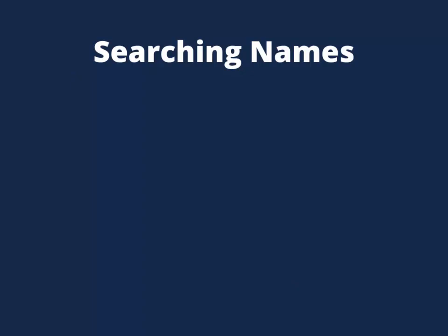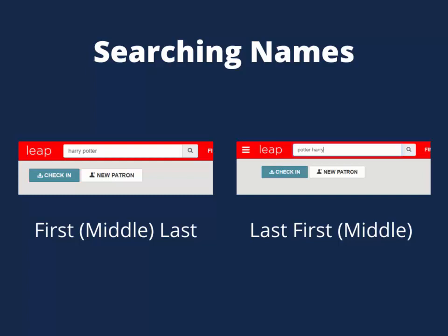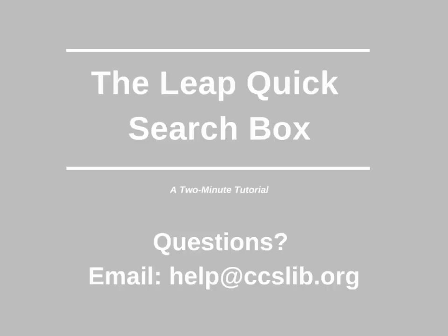There is a little more flexibility when searching names, however, because they are indexed in the database in multiple ways. For example, you can search first name last name, last name first name, just first name, or just last name. This has been a two-minute tutorial on the Quick Search box. If you have any questions, please email help at ccslib.org.